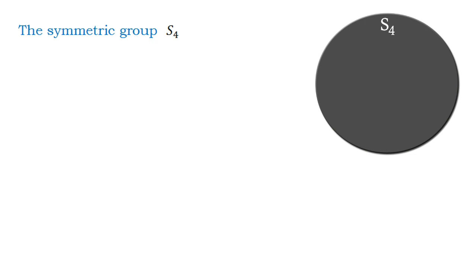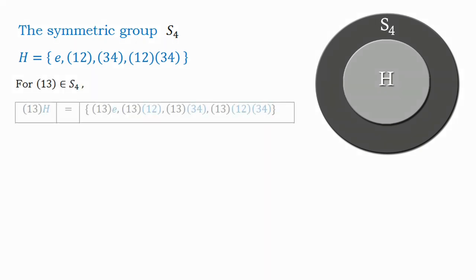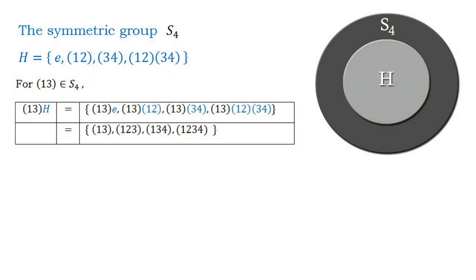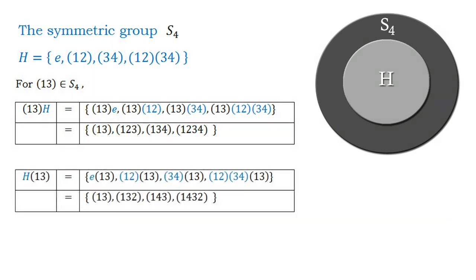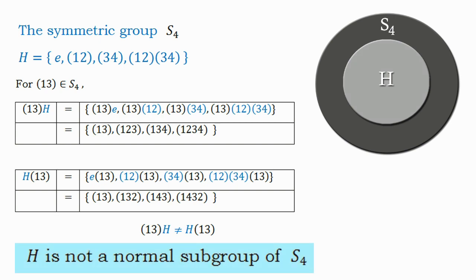Let's take the symmetric group S4 and a subgroup H containing four elements of S4. Taking the permutation (13) from S4 and multiplying it to the left of H, we get these permutations. Comparing the left and right cosets, we find they are not identical — the left coset is not equal to the right coset. So the subgroup H of S4 is not a normal subgroup of S4.